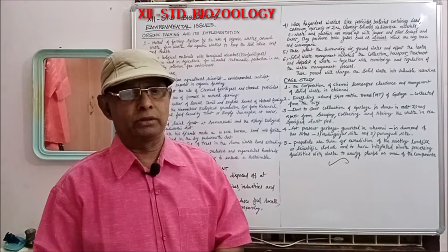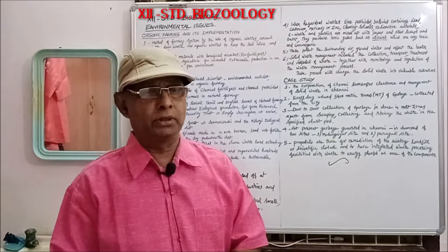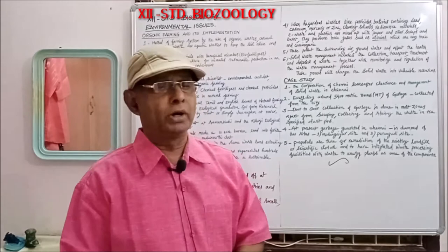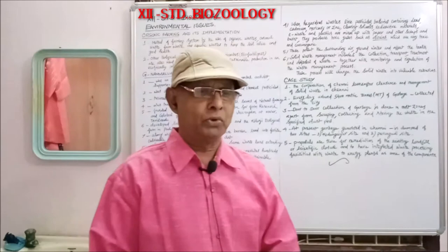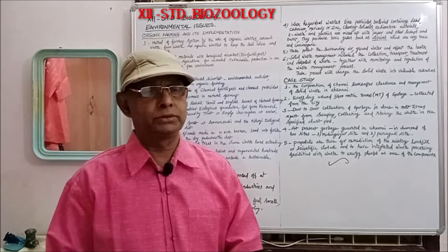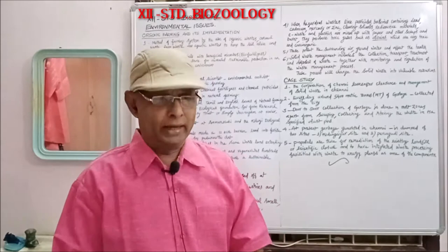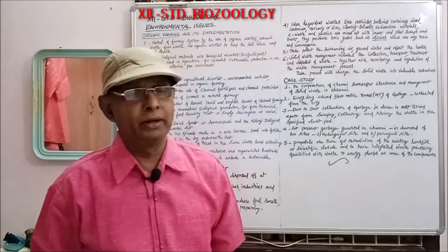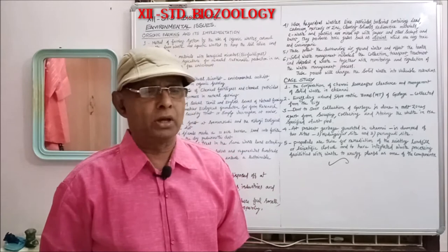Ji Namalwar was an Indian agricultural scientist, environmental activist, supporter and expert of organic farming. He was best known for his work on spreading ecological farming and organic farming. He was born on 6 April 1938 in Alangadu of Tangju district.